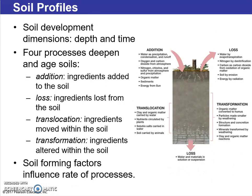Now we'll discuss the development of soil through depth and time, also known as soil profiles. There are really four processes that deepen and age soils: addition, loss, translocation, and transformation. These describe what actually happens to soil over time, and the soil forming factors influence the rate of these processes.